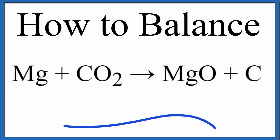To balance this equation, Mg plus CO2 yields MgO plus C, let's first count up the atoms on each side of the equation.